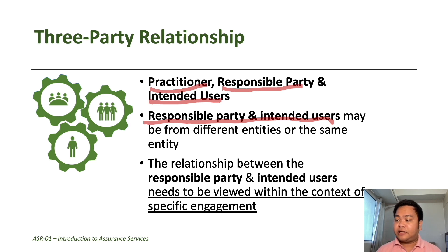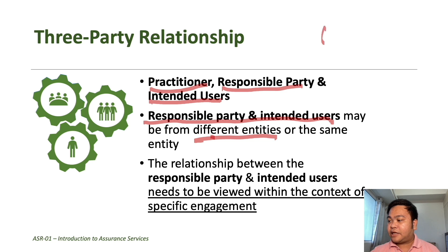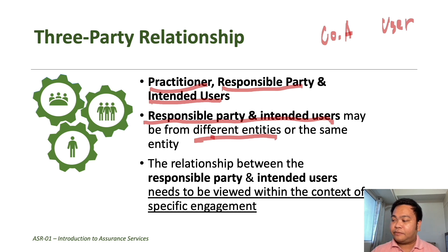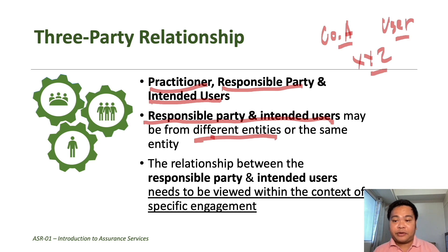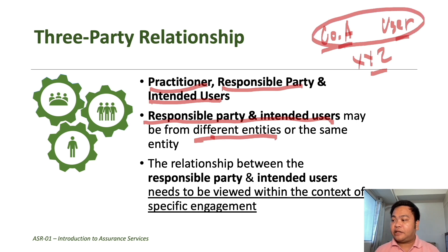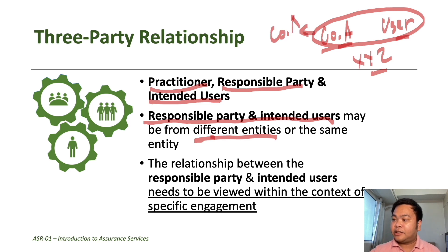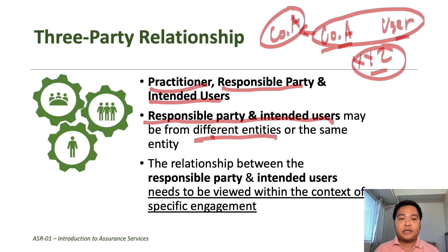There are no issues regarding the existence of a three-party relationship when the responsible party and the intended user are from different entities. For example, if the responsible party is Company A, the user is an outsider, and there is an independent firm called XYZ Firm — in that case there are clearly three parties. However, what if Company A's responsible party and the user come from the same entity? That would seem to mean only two parties are involved.